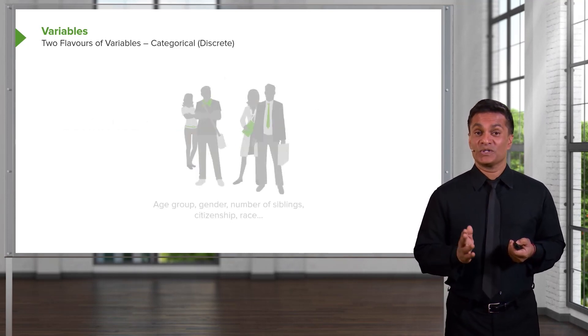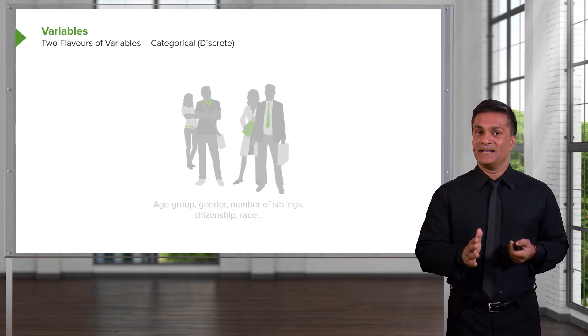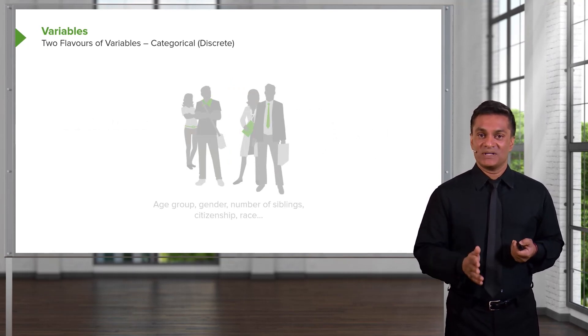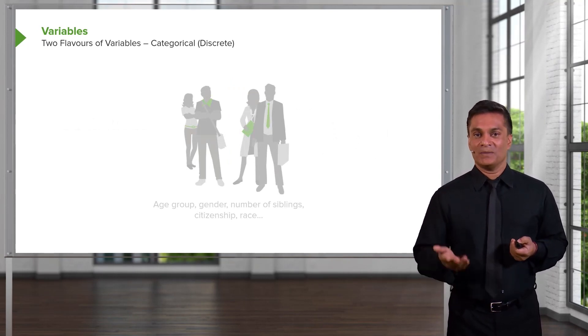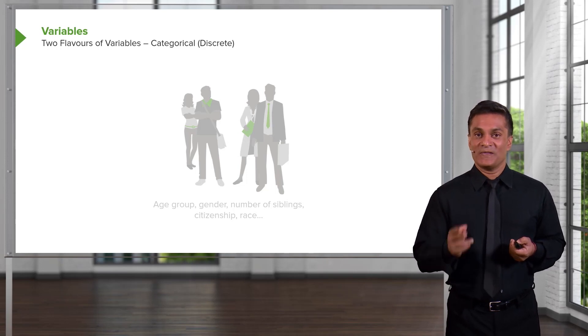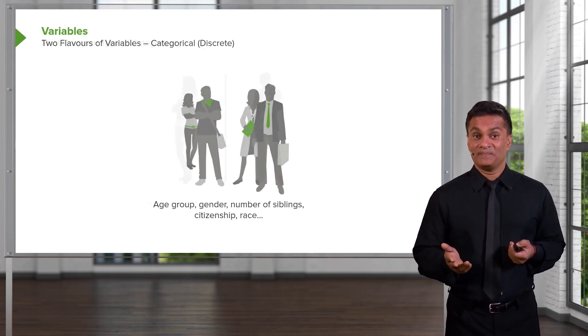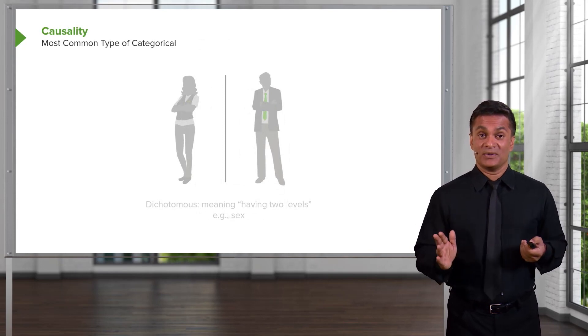On the other hand, a categorical or discrete variable doesn't have meaning in between. Age group, gender, number of children, number of siblings, where I was born. There's nothing in between that gives me meaning. Those are the two general categories.